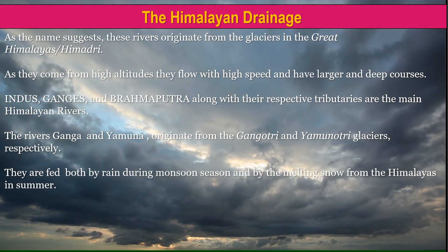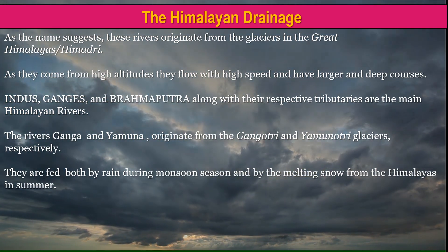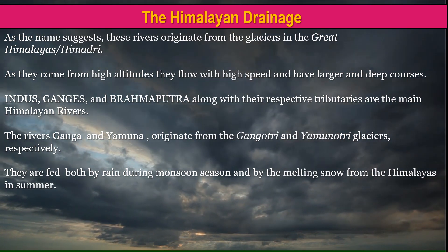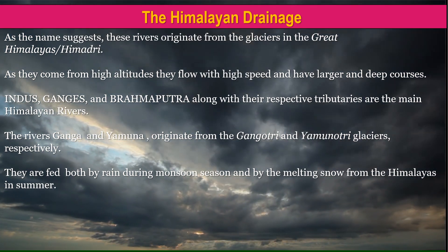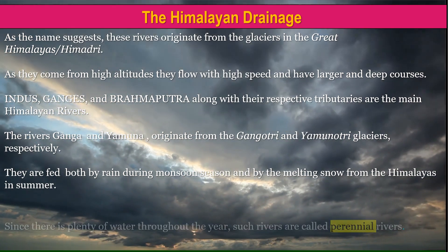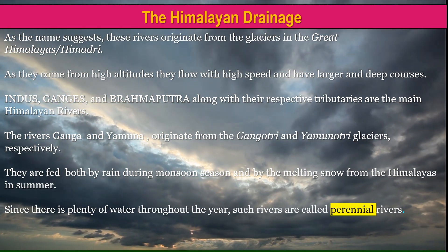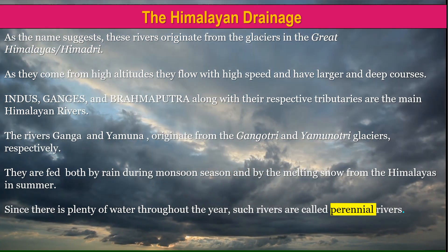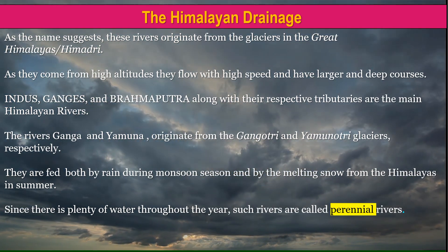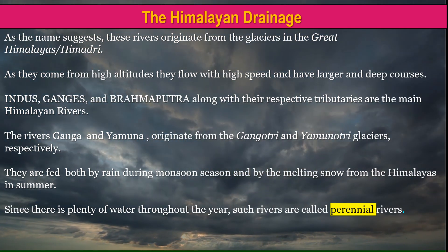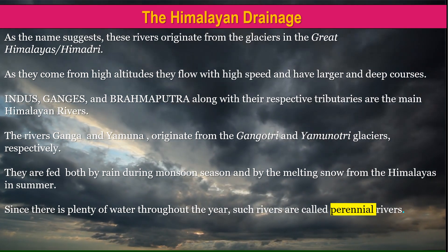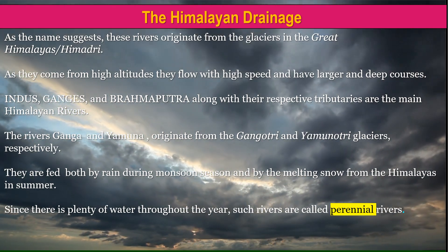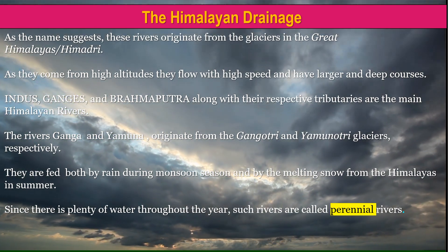They are fed both by rain during the monsoon season and by the melting snow from the Himalayas in summer. Since there is plenty of water throughout the year because of the rains and the melting snow, such rivers are called perennial rivers.